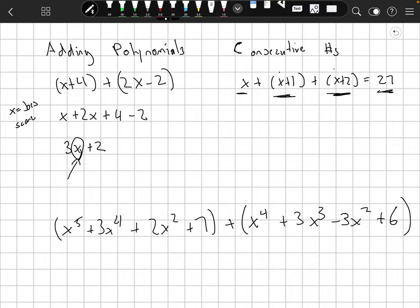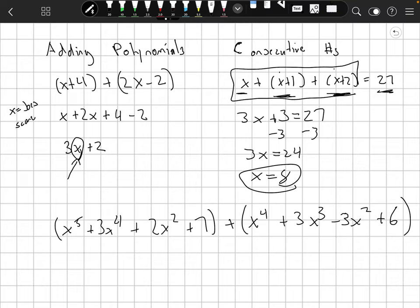We could say x plus a number 1 bigger than x plus a number 2 bigger than x equals 27. And then we're just going to combine like terms. So x plus x plus x. That's 3x plus 3 equals 27. And from there we can just kind of solve. So we subtract the 3. 3x is 24. And then x would be 8. So in order to solve that problem we had to add some polynomials together. So a monomial plus a binomial plus another binomial.